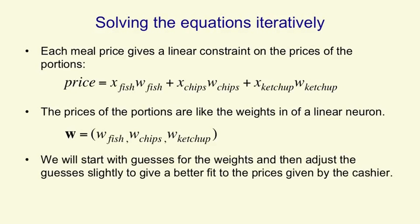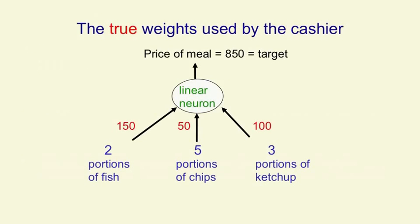We're going to start with guesses for these prices, and then we're going to adjust the guesses slightly so that we agree better with what the cashier says. So let's suppose that the true weights that the cashier is using to figure out the price are 150 for a portion of fish, 50 for a portion of chips, and 100 for a portion of ketchup. For the meal shown here, that will lead to a price of 850. So that's going to be our target value.